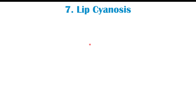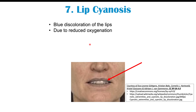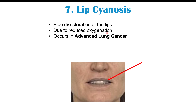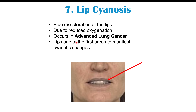Finally, lip cyanosis — a blue discoloration of the lips due to reduced oxygenation — can occur in more advanced stages of lung cancer, when the lungs have deteriorated significantly. The lips are one of the first areas to manifest cyanotic changes because of the thin skin and superficial blood supply, making changes in blood oxygenation visible earlier than in other parts of the body.